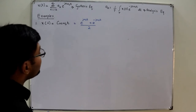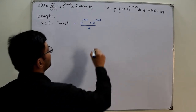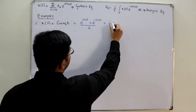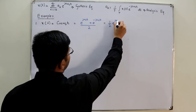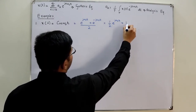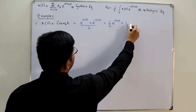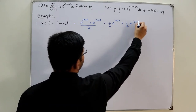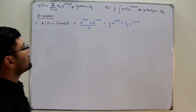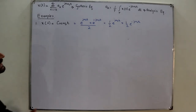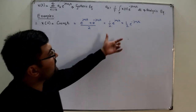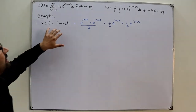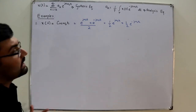If I further split it up, I could write this as (1/2)e^(jω₀t) plus (1/2)e^(−jω₀t). This is what we get, and this particular expression is the Fourier series representation of this signal.